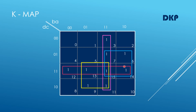Now you have to read the K-map. You will get a product term from each group. There are four groups, so you get four product terms. The first product term is DC, because this group of cells represents DC, where 11 represents DC.